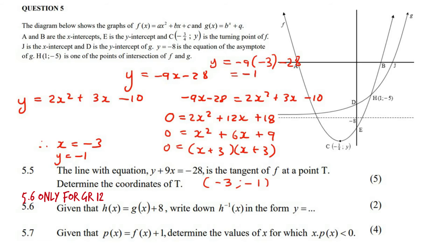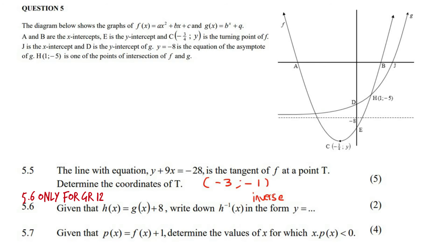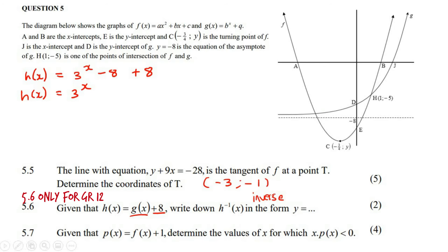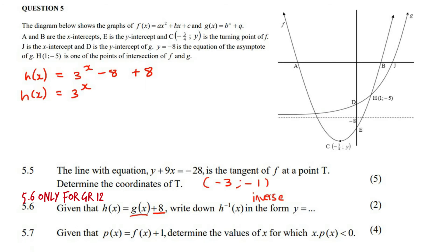Question 5.6: given that h of x equals g of x plus 8, write down h inverse. Some learners might think h with a minus 1 means first derivative, but no — it stands for inverse. The first derivative would have a little dash. So h of x is g of x, which is 3 to the power x minus 8, and then we just add 8. So h of x equals 3 to the power x.